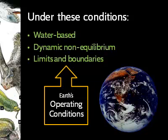Earth is water-based, as we talked about earlier. It's in a state of dynamic non-equilibrium — in other words, things are always changing and not in a predictable way. And there are limits and boundaries. When you're looking at that with a designer's eye and design thinking, you can think of these as Earth's operating conditions. When you design something, you have to understand what the operating conditions are that you have to design for. That's part of nature's rules.